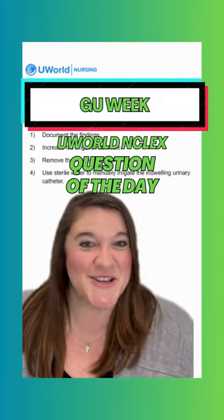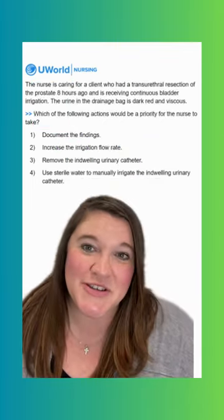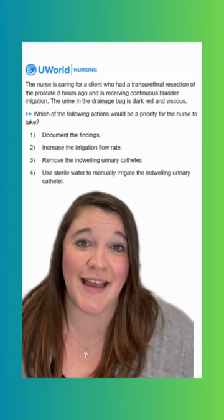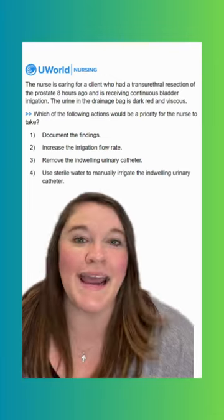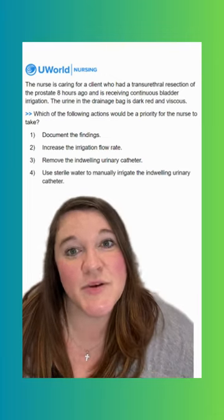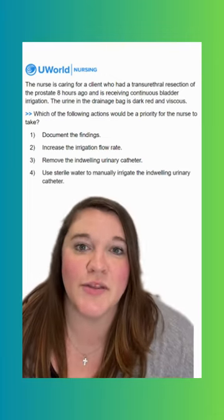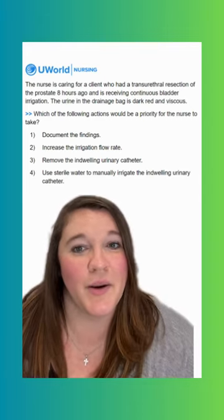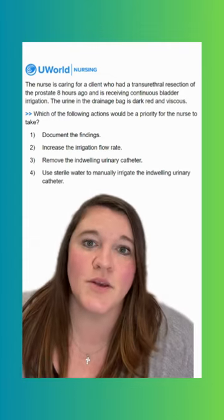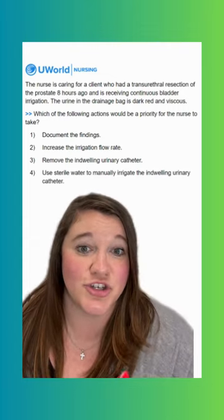Hey y'all, welcome back for another GU question of the day. Our question today says the nurse is caring for a client who had a transurethral resection of the prostate, or a TURP, eight hours ago and is receiving continuous bladder irrigation. The urine in the drainage bag is dark red and viscous. Which of the following actions would be a priority for the nurse to take?